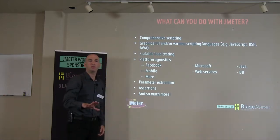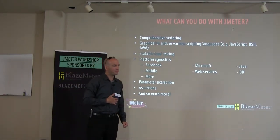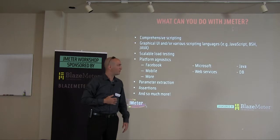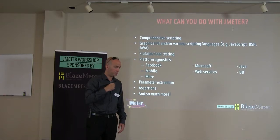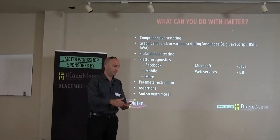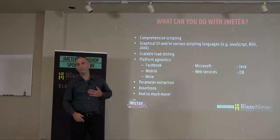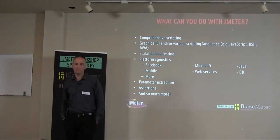Any questions so far? Someone asks about large company success stories using JMeter. I can tell you Citibank, Toyota, Second Market, BBC, and a lot more. These are big companies. Even if you use a primary test method, you want to use a secondary one, and if you're really smart you're using three — then you can compare them because they won't all be consistent.